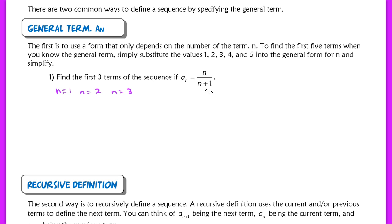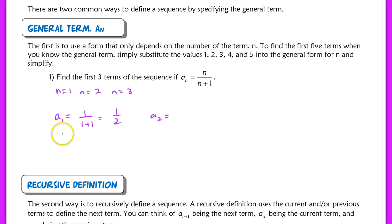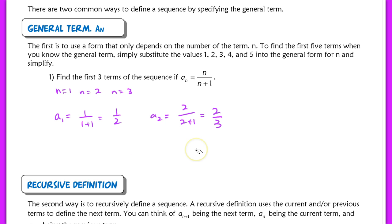It's just a function where n is your input. For example, a sub 1 is like f of 1 — we don't use function notation though. So a sub 1 equals 1 over 1 plus 1, which is one half. a sub 2 equals 2 over 2 plus 1, or two thirds. And a sub 3 equals 3 over 3 plus 1. It's just function notation replaced with a sub n.